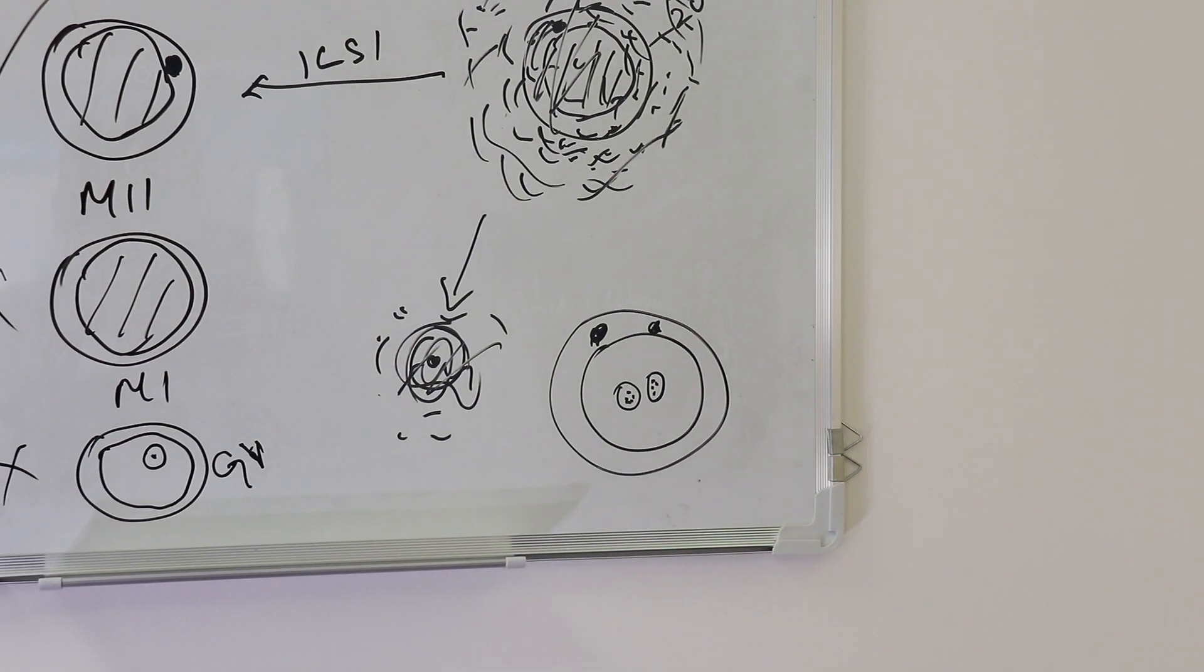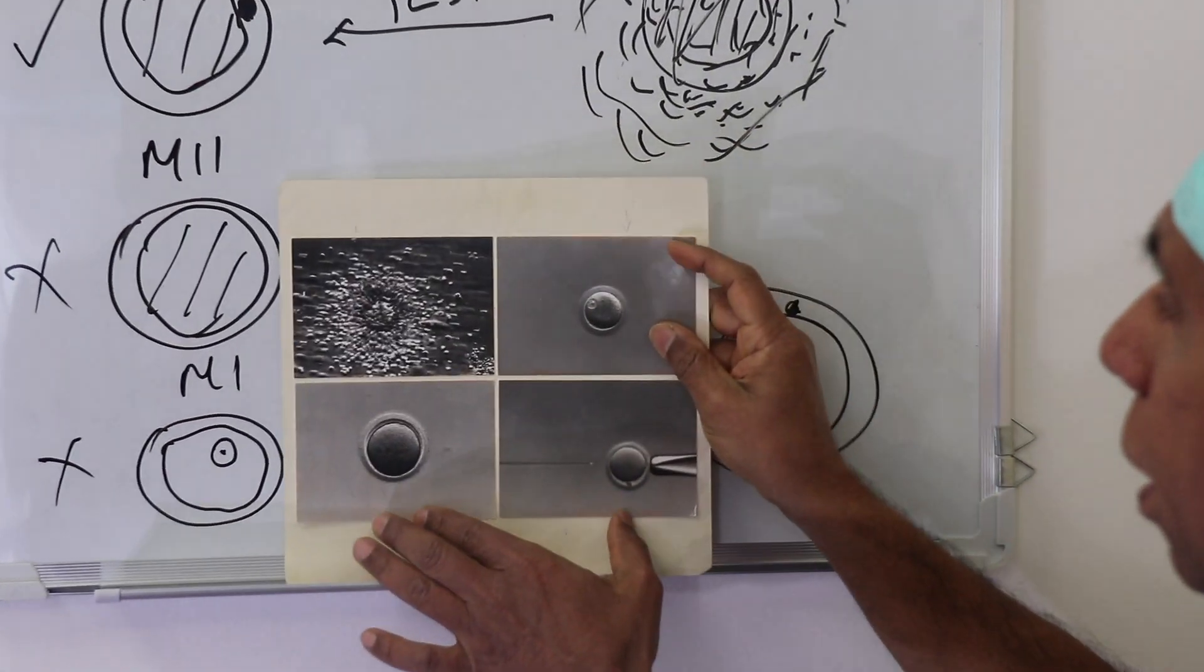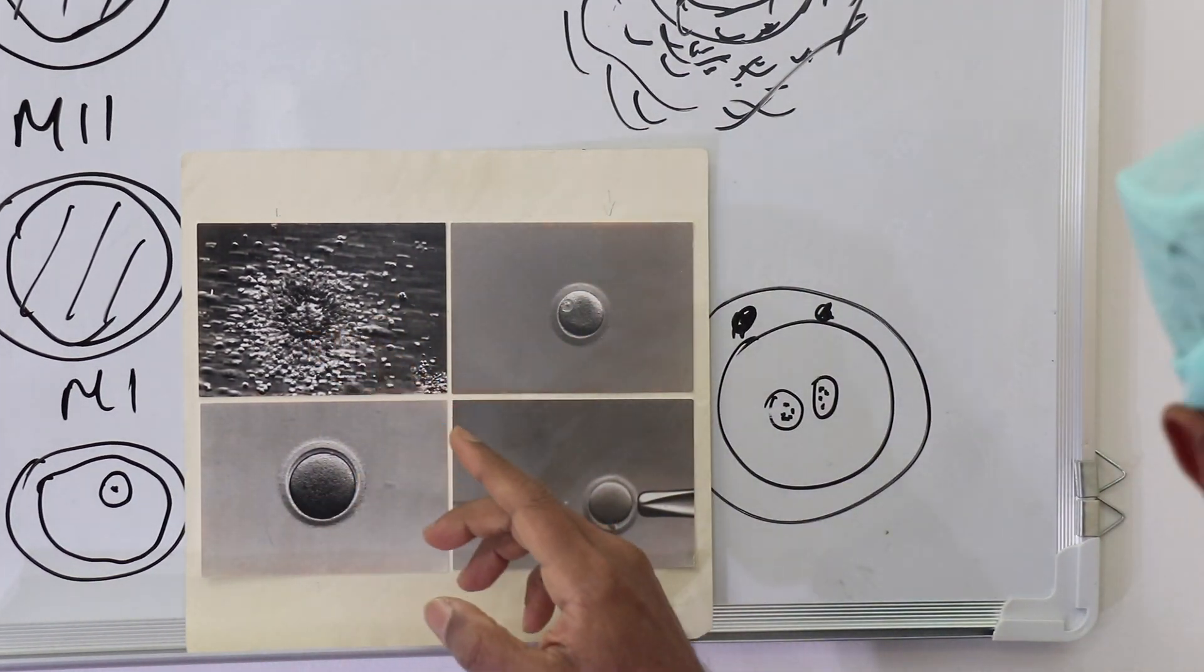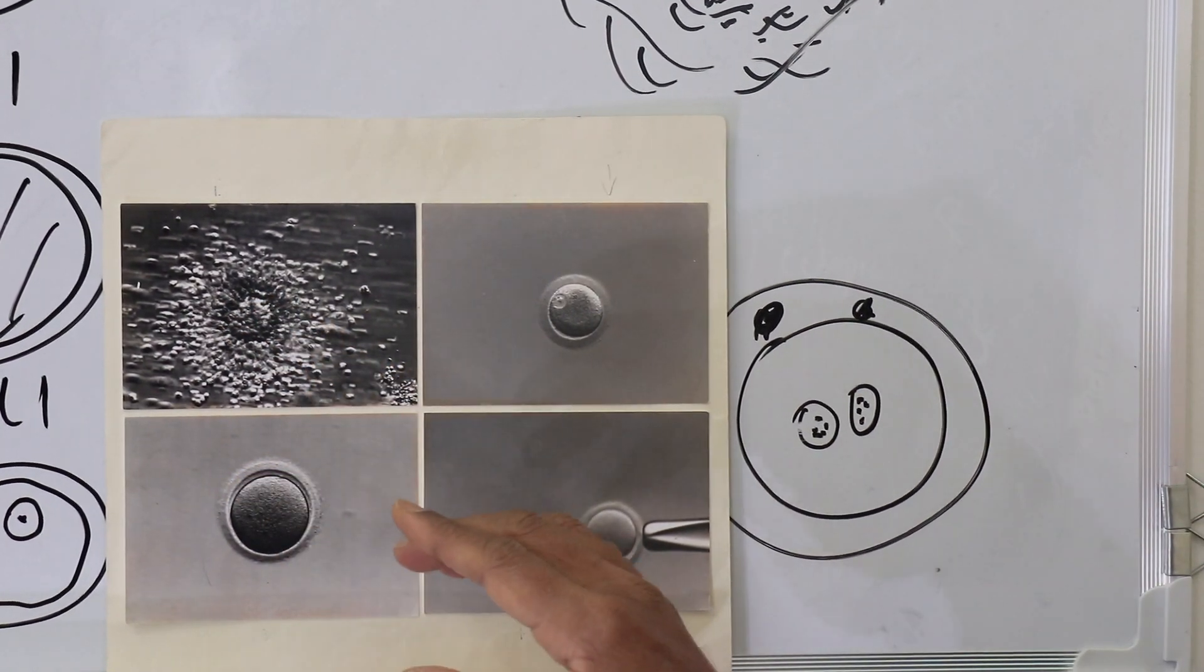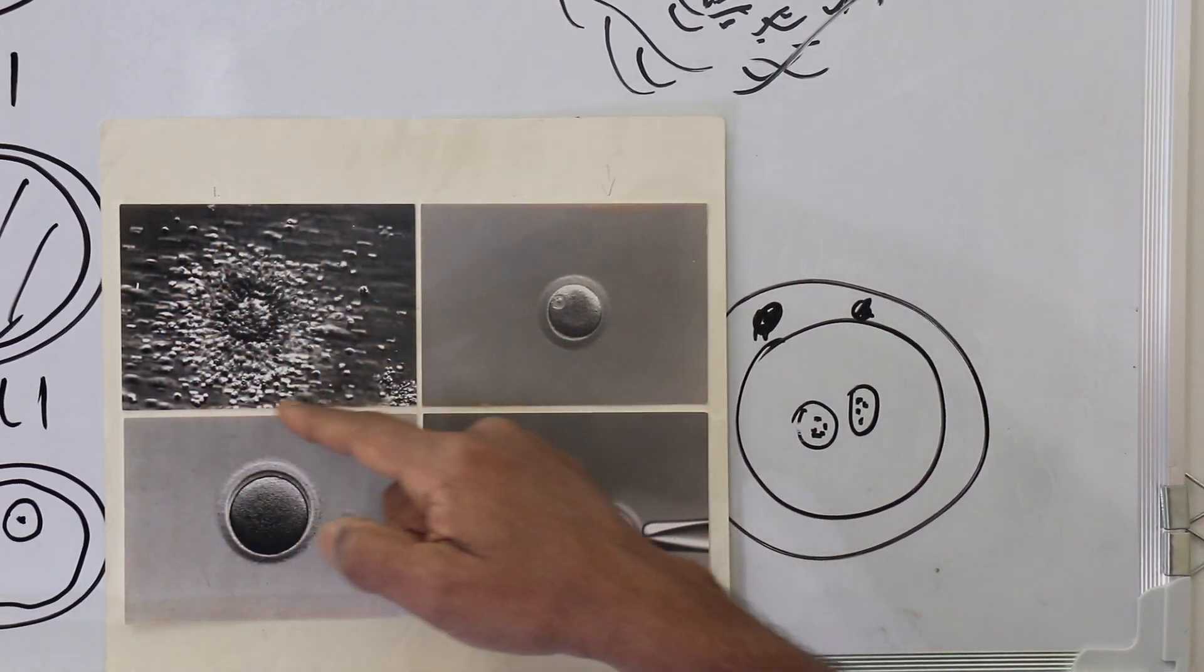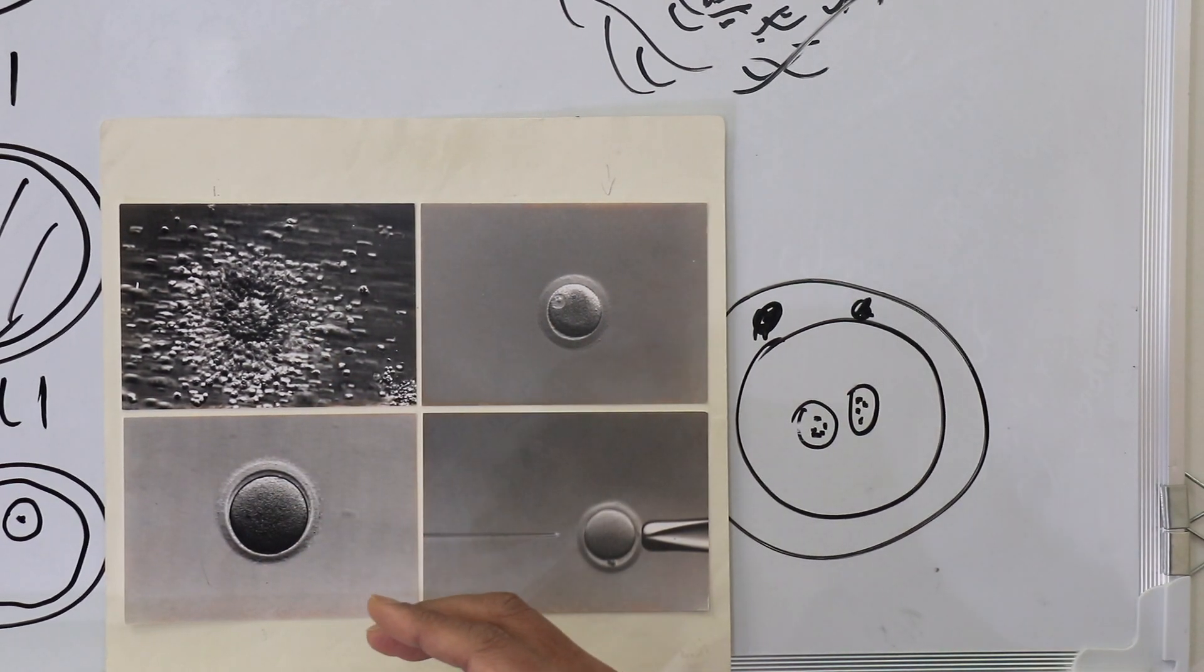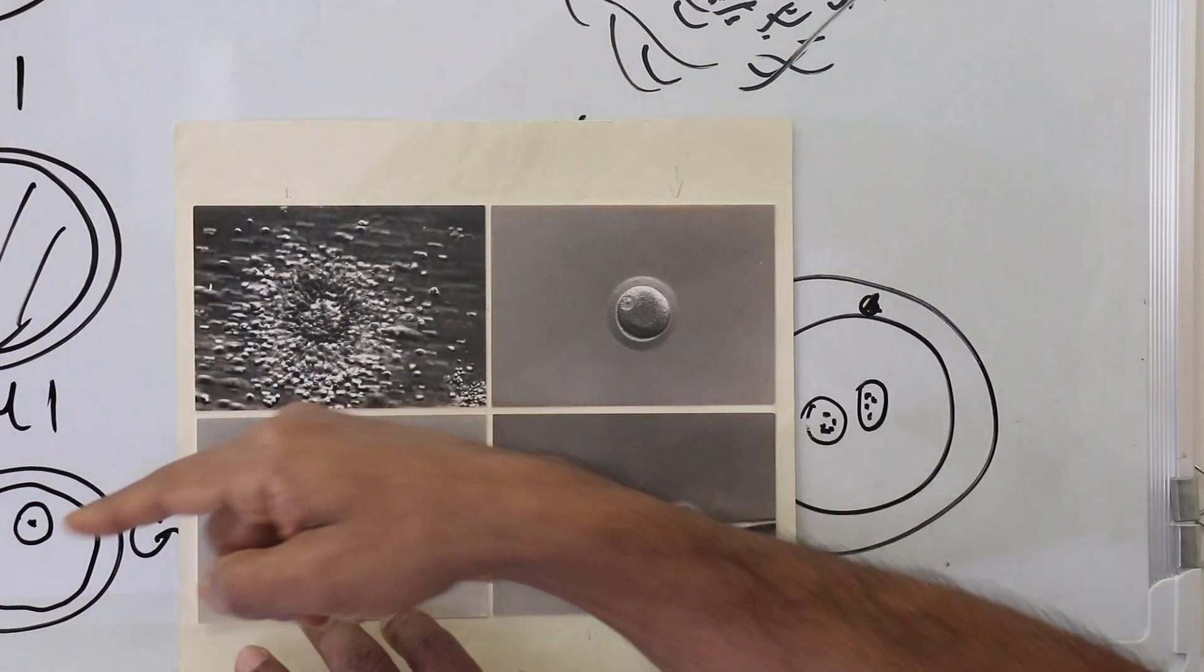When we get eggs from the follicle, it will look like this. Can we see the maturation of these eggs? No, because we don't see the egg properly. So we don't know whether it's M2, M1, or GV, but looking at these cells we can guess. There are very nice cumulus cells, fluffy, so it could be metaphase 2, but it's not for definite.